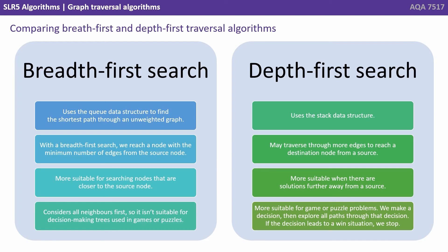So let's have a quick overall comparison. With a breadth-first search, we use the queue data structure to find the shortest path in an unweighted graph. We reach a node with the minimum number of edges from the source. It's more suitable for searching nodes that are closer to the source node, and it considers all neighbours first, so it isn't suitable for decision-making trees used in games or puzzles. With a depth-first search, we use the stack data structure. We may traverse through more edges to reach a destination node from a source. It's more suitable when the solution is further away from the source, and it's also more suitable for game or puzzle problems. We make a decision, and then explore all paths through that decision. If the decision leads to a win, we stop.